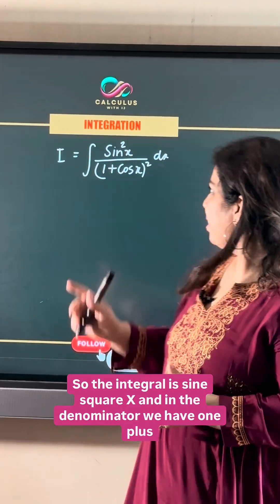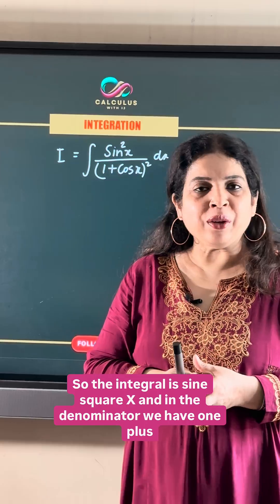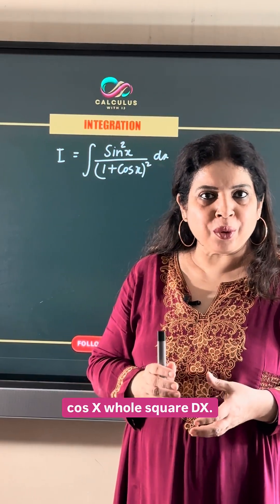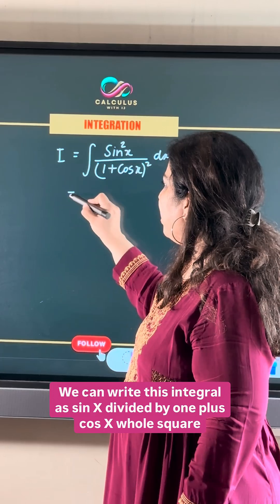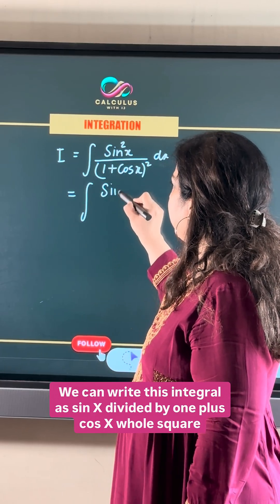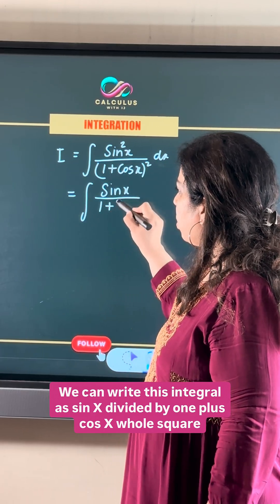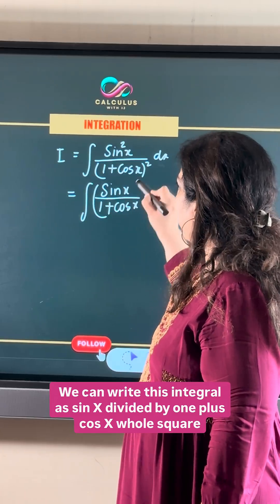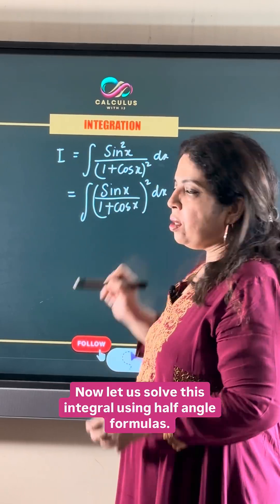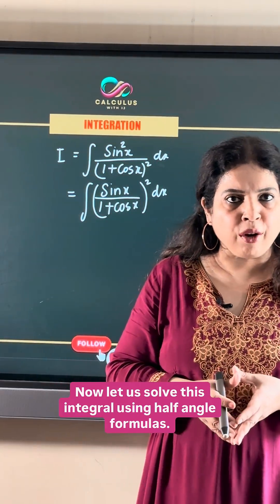The integral is sine square x divided by 1 plus cos x whole square dx. We can write this integral as sine x divided by 1 plus cos x whole square dx. Now let us solve this integral using half angle formulas.